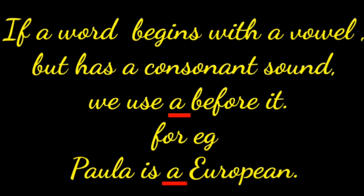If a word begins with a vowel letter but has a consonant sound, we use a before it. For example: Paola is a European. Here the word 'European' starts with the letter E, which is a vowel letter, but it has a consonant sound. So we use a before the word European, because it has a consonant sound.